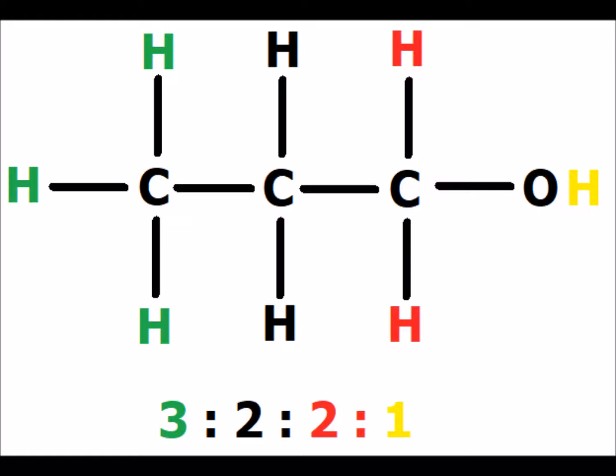In 1-propanol, we see that there are four distinct types of hydrogen: the hydroxyl hydrogen shown in yellow, the two red hydrogens directly attached to the alpha carbon shifted downfield, two more methylene hydrogens attached to the second carbon, and three green methyl hydrogens attached to the third carbon. The ratios are therefore 3 to 2 to 2 to 1.